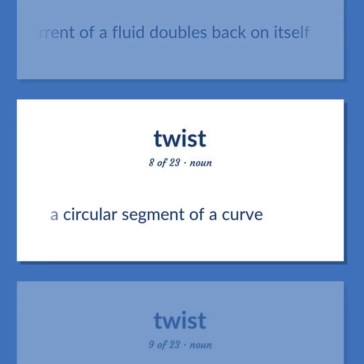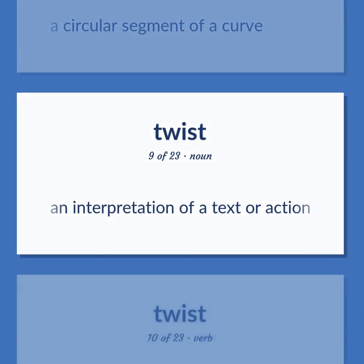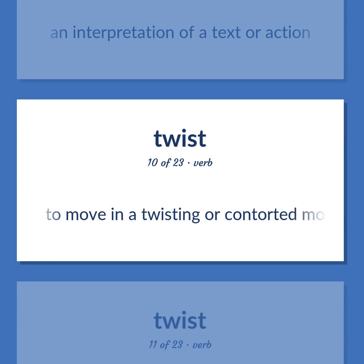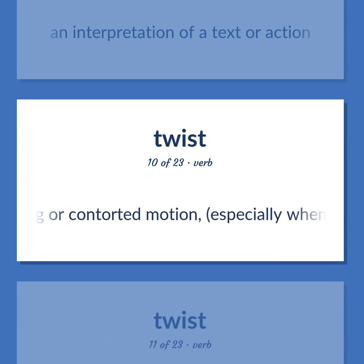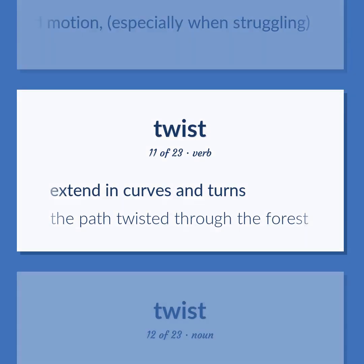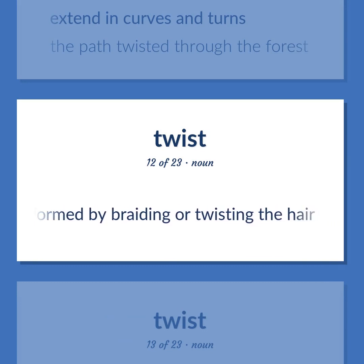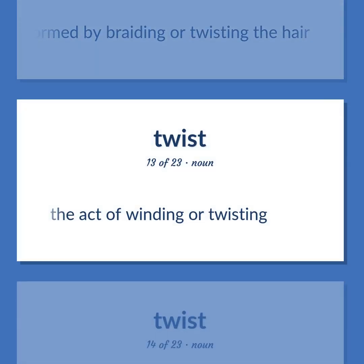Twist: a circular segment of a curve. Also, an interpretation of a text or action. Also, to move in a twisting or contorted motion, especially when struggling. Also, to extend in curves and turns — 'the path twisted through the forest.' Also, a hairdo formed by braiding or twisting the hair. Also, the act of winding or twisting.